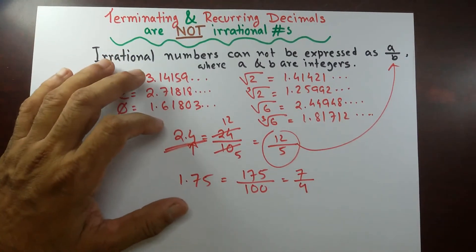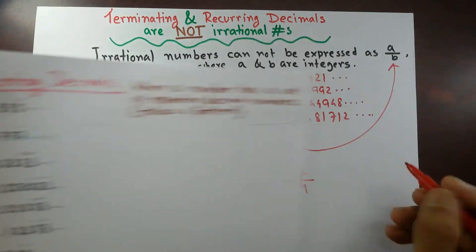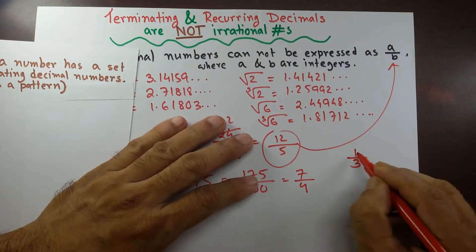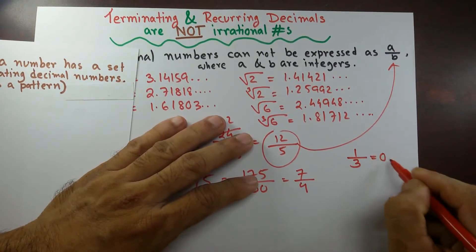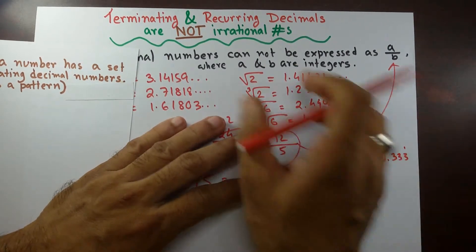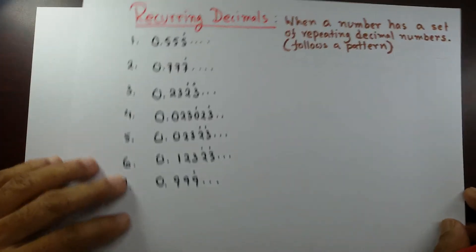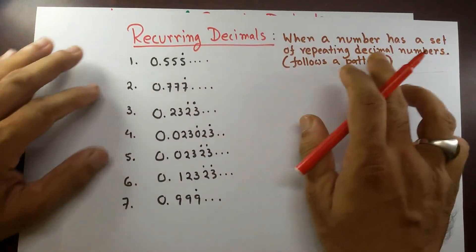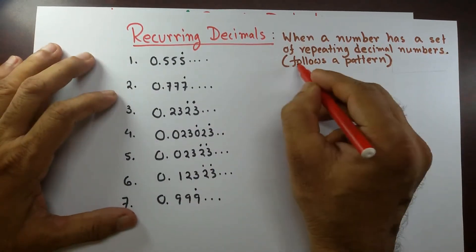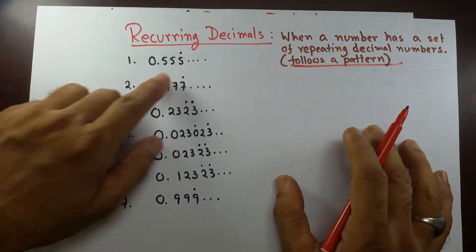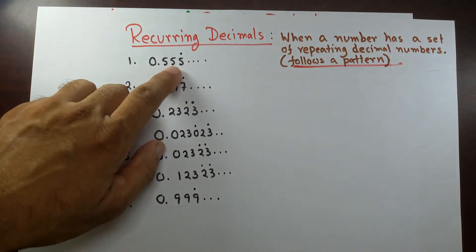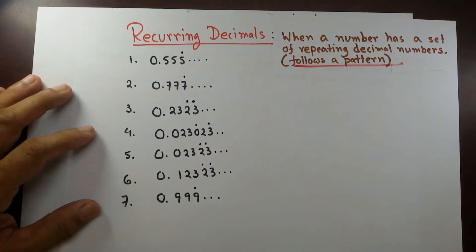What about recurring decimal places? A famous example is 1 over 3. When you divide it, you get 0.333... and the 3 never ends. This is one example of a recurring decimal — when a number has a set of repeating decimal digits or follows a pattern. Take 0.5555... with 5 repeating. I'll show you a nice proof.